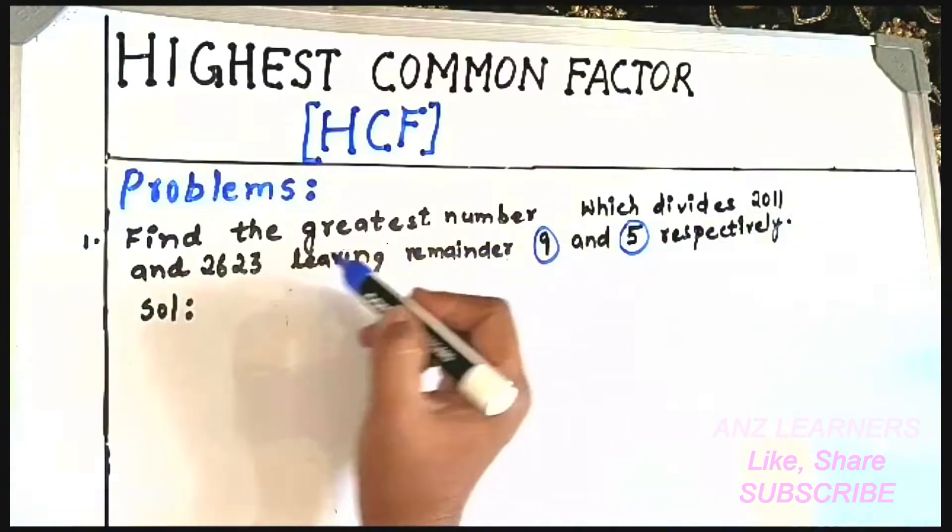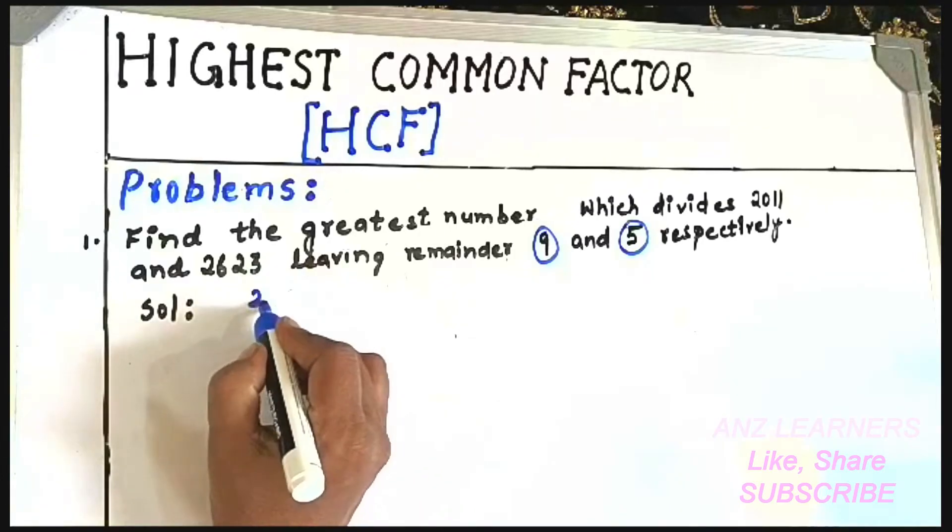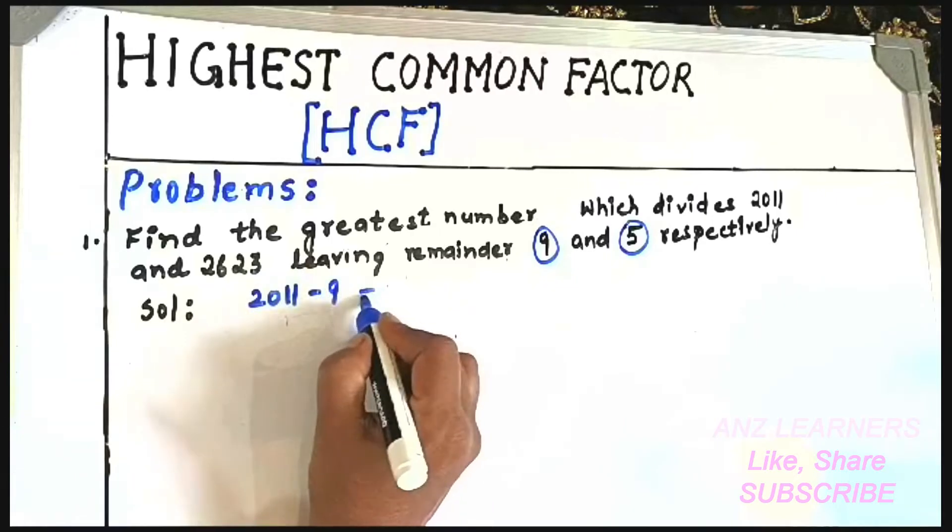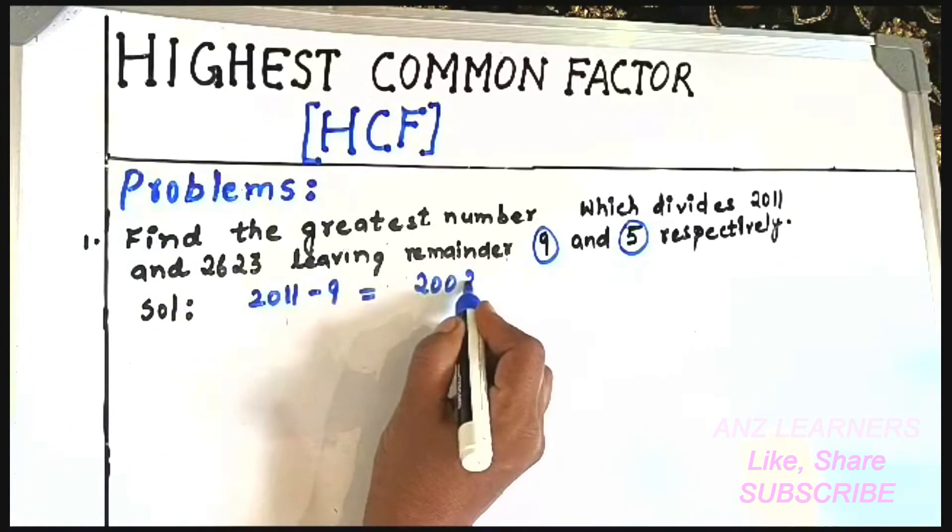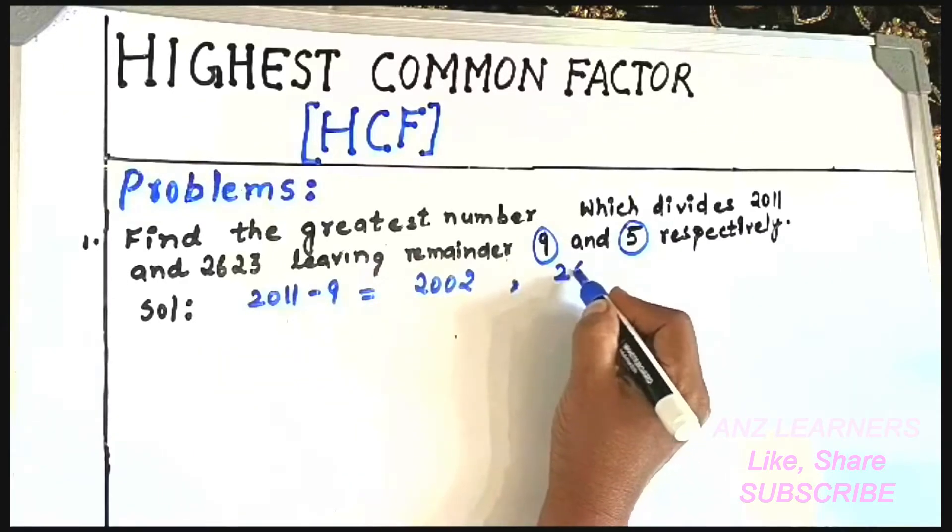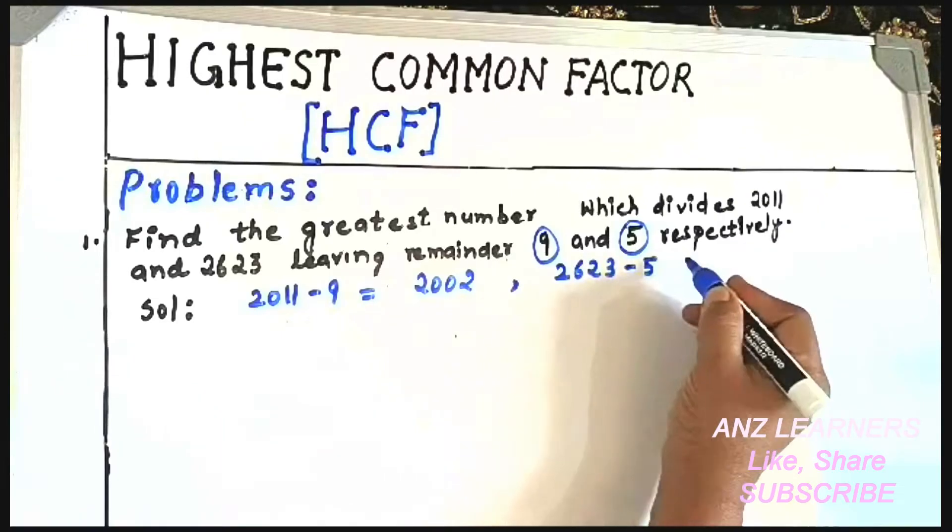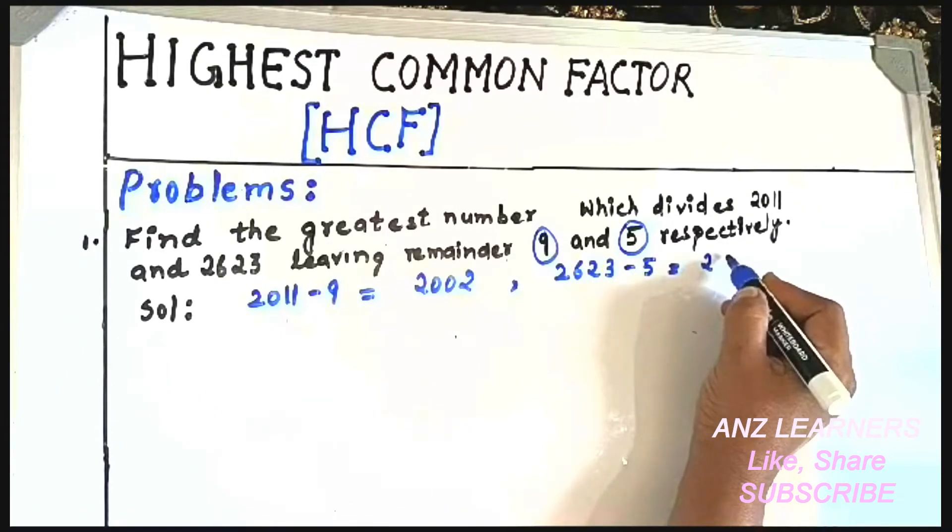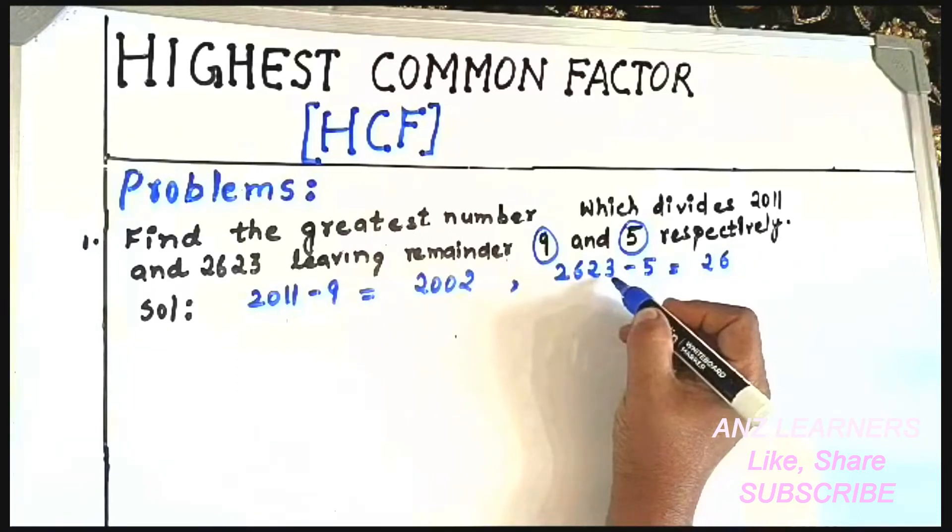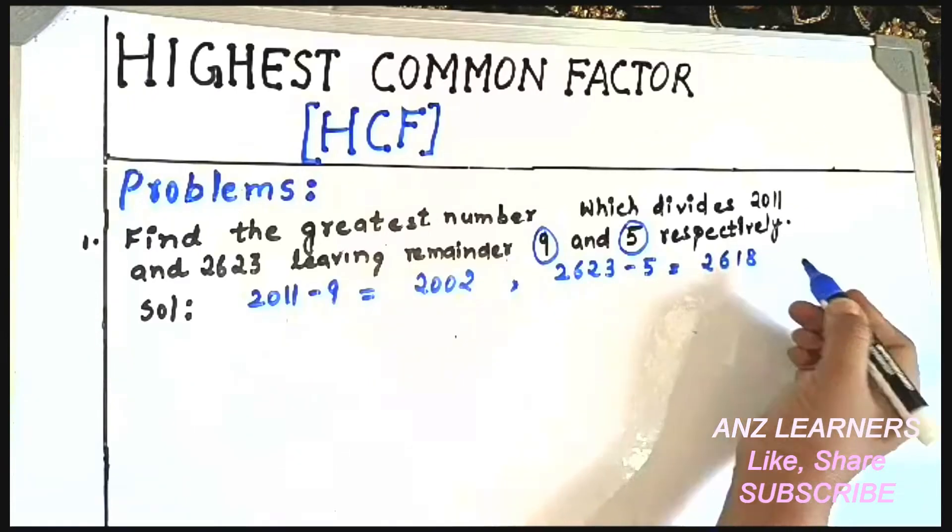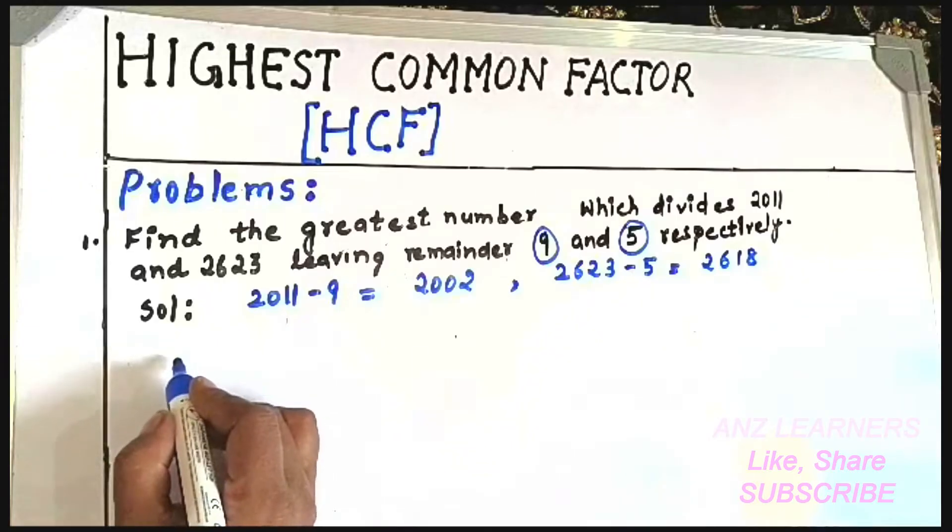and 5 is the remainder for 2623. So reduce it: 2011 minus 9 equals 2002. Similarly, 2623 minus 5 equals 2618. Right, so now